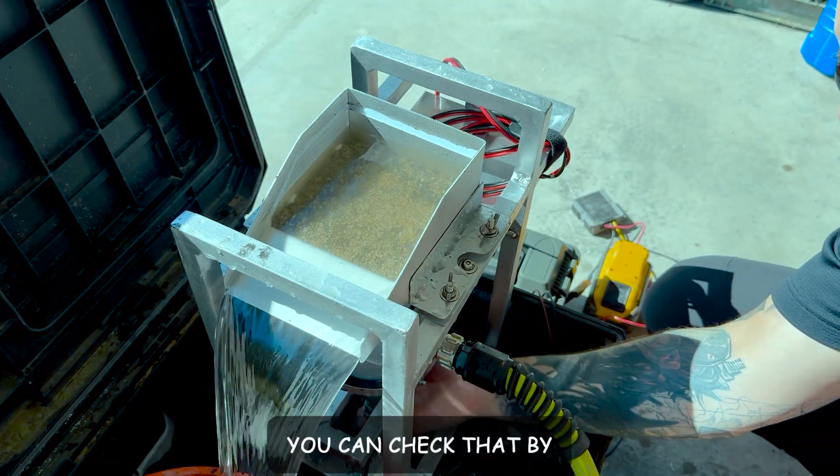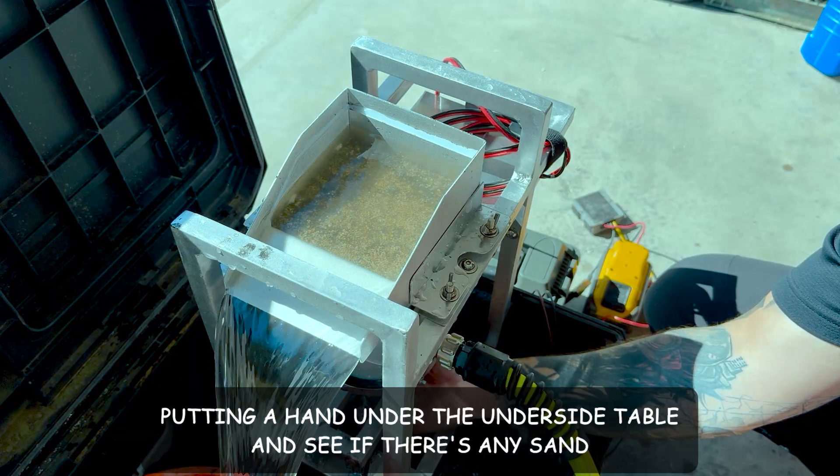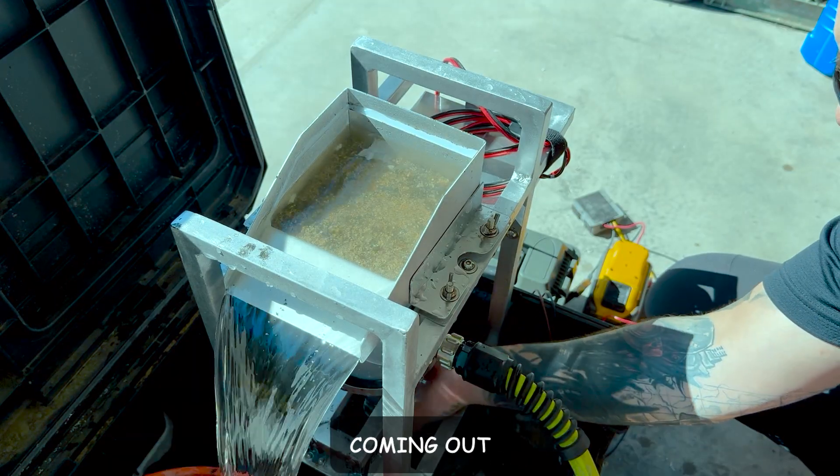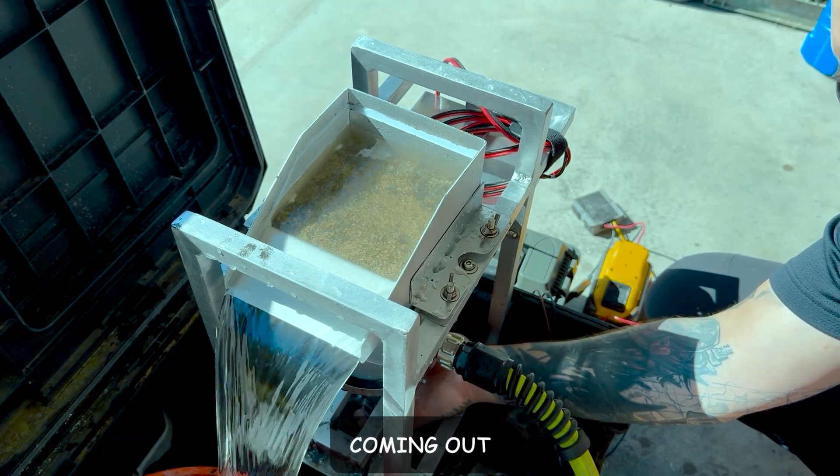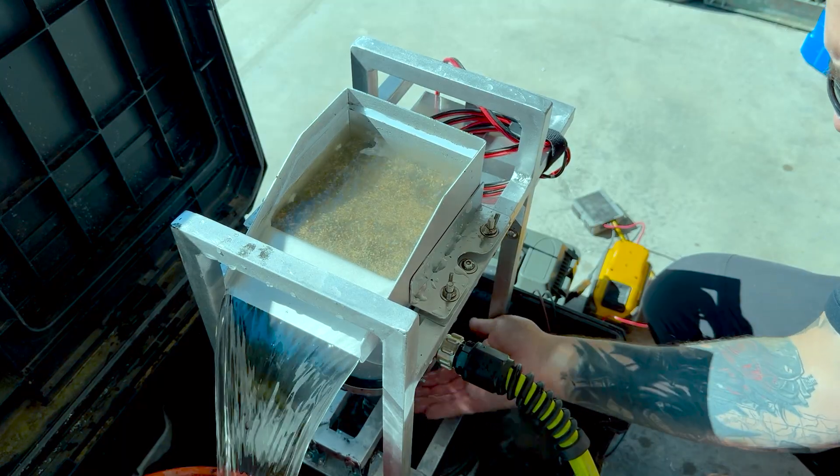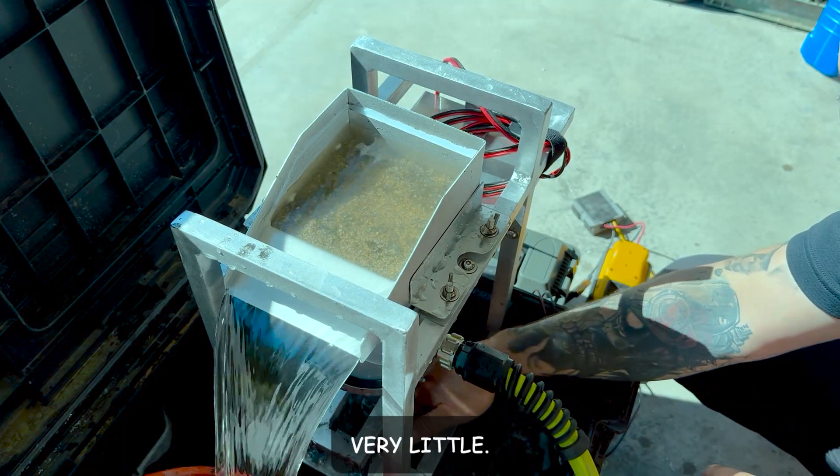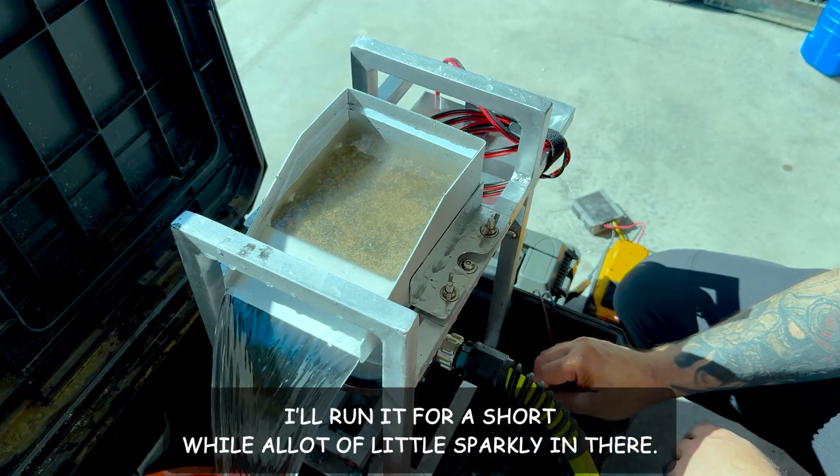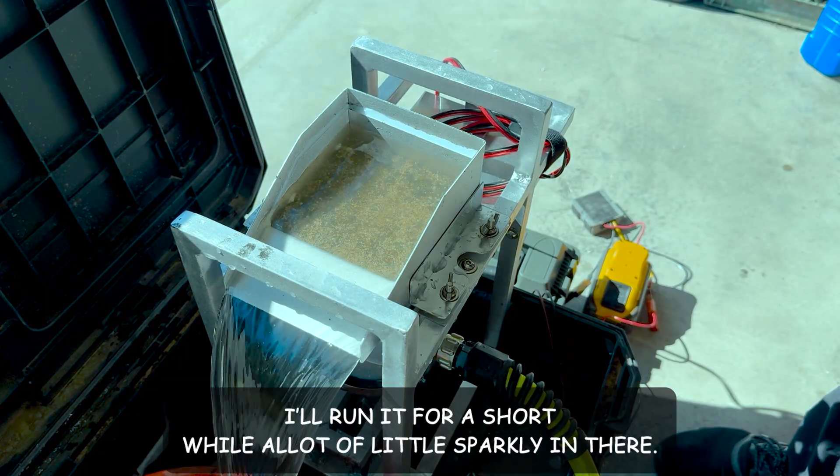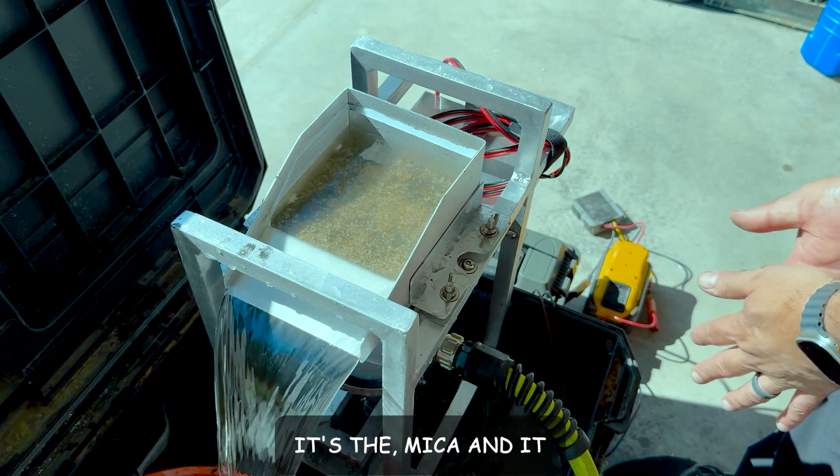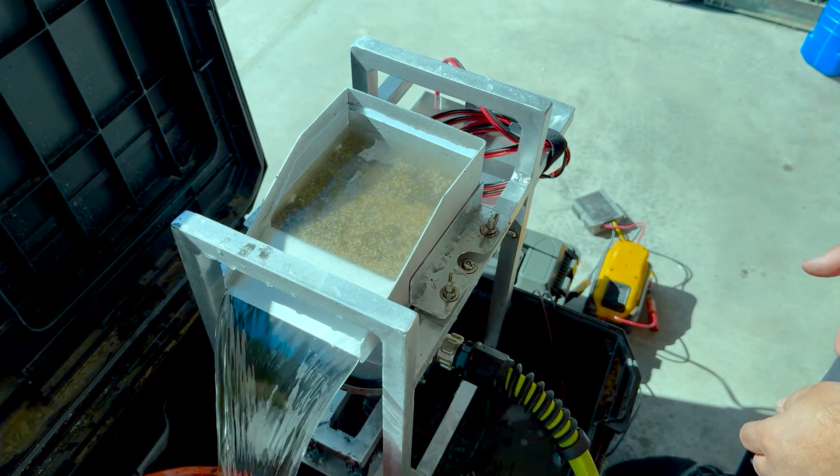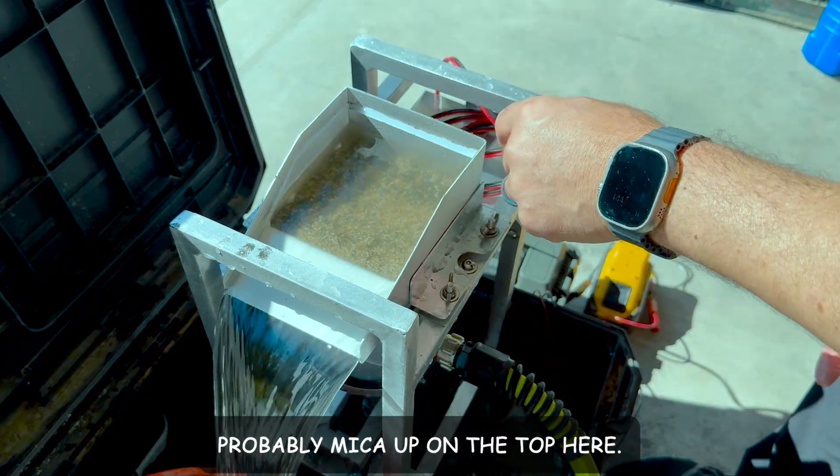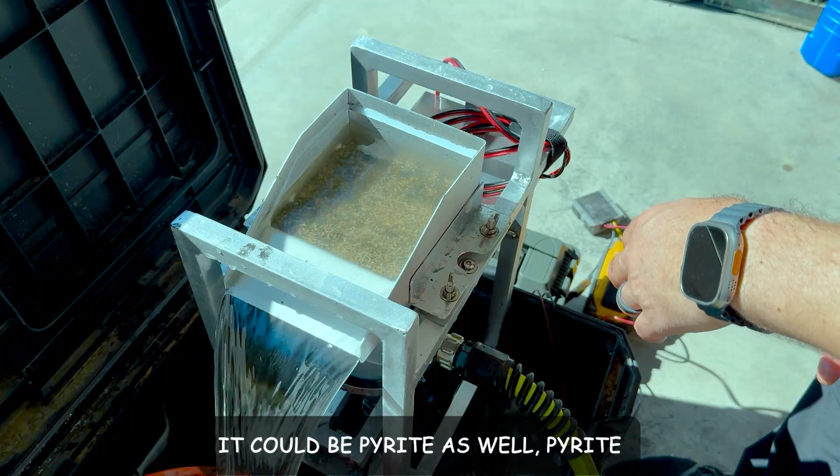You can check that by putting my hand under the underflow tube and seeing if there's any sand coming out. Very, very little, couple little pieces here and there. We'll let that run for another short while. A lot of little sparklies in there, but it's not gold. It's the mica and probably mica up on the top here.